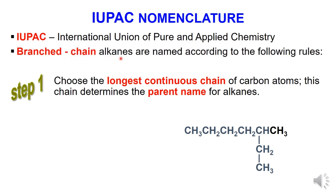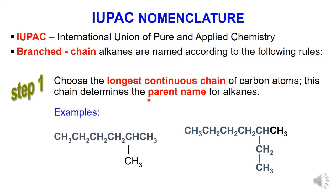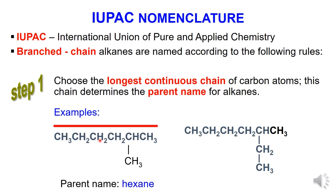Branch or chain alkanes are named according to the following rules. Step 1: Choose the longest continuous chain of carbon atoms. This chain determines the parent name for alkanes. Example: the longest continuous chain of carbon atoms is from left to right, which consists of 6 carbons. So the parent name of the alkane is called hexane.